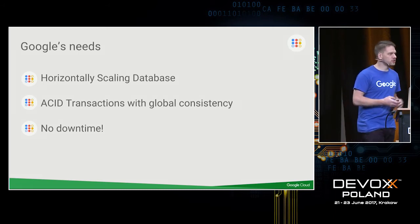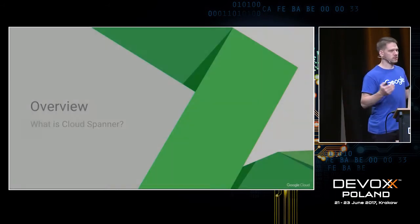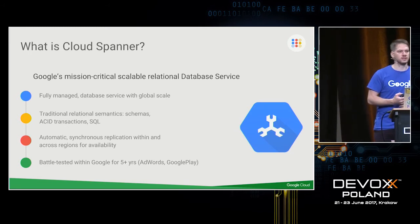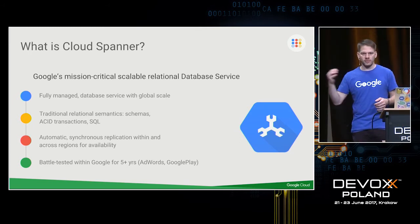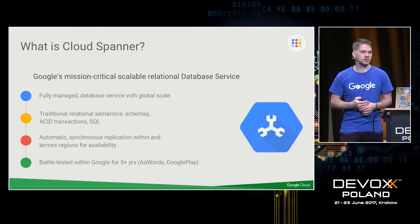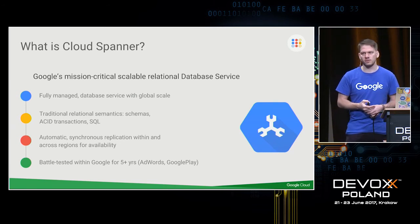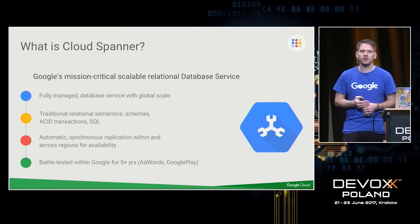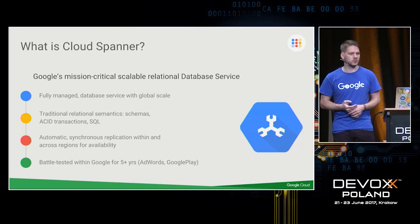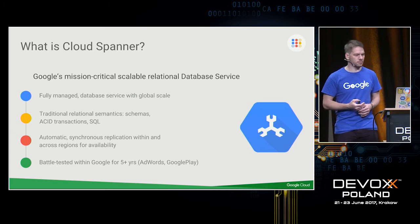So we built Spanner inside Google to back our mission-critical systems — things like the ad system, but nowadays many of our products are built on top of Spanner. One example is Gmail. We have a lot of products with over a billion users that are actually backed by Spanner.